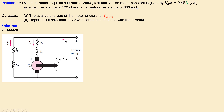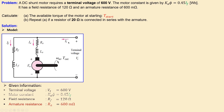In the first case we need to calculate the available torque at start. Let's summarize the given information: the terminal voltage, the motor constant as a function of the field current, the field resistance, and the armature resistance.